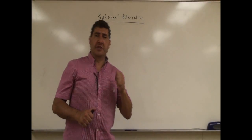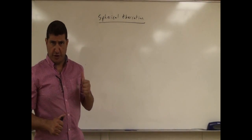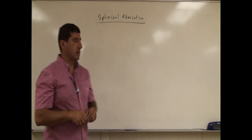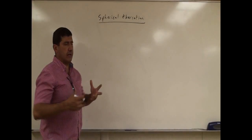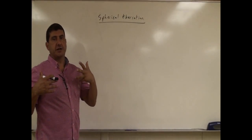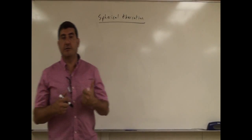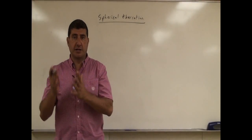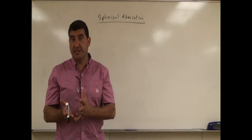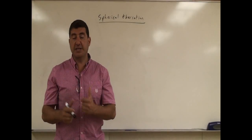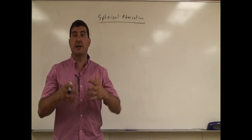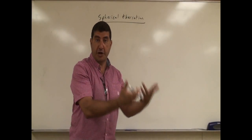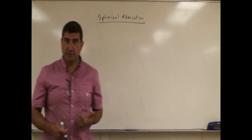Welcome back. In this video, I'm going to explain spherical aberration and do a problem with it. Spherical aberration is an issue that happens when a lens or a mirror is cut spherically rather than parabolically.